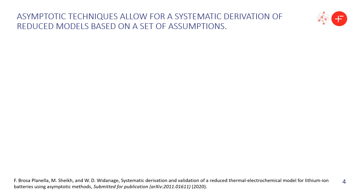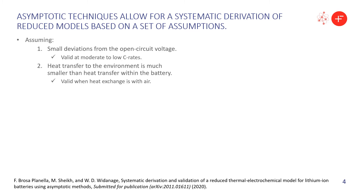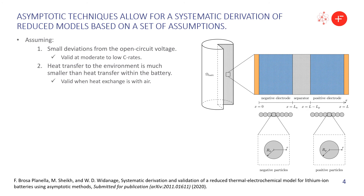In particular, we consider what we call the thermal single particle model with electrolyte, or TSPME. The full details can be found in this arXiv preprint, and I encourage you to read it if you're interested. The main idea is that we use a mathematical technique called asymptotic techniques, which allows a systematic derivation of reduced models based on a set of assumptions decided a priori. In this case, it is mainly two assumptions. The first, referring to the electrochemical part, is that we have small deviations from the open circuit voltage — making this model valid at moderate to low C-rates. The second, for the thermal part, says that heat transfer to the environment is the bottleneck, meaning the slow process is exchanging heat with the environment rather than within the battery. That's true when heat is exchanged with air rather than an oil bath. So when that's the case, we have this model — check the preprint for the equations and full derivation.